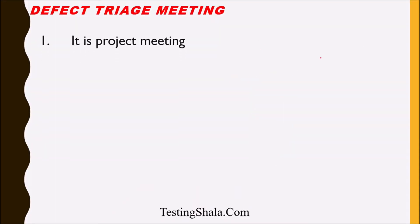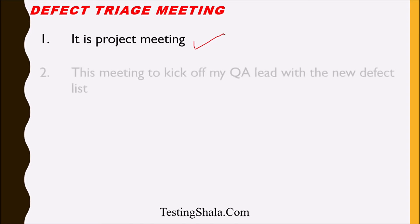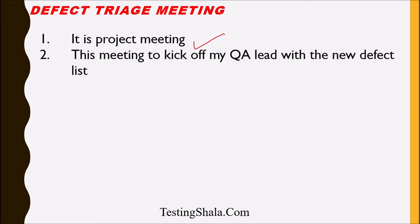A defect triage meeting is a project meeting — it is similar to any other project meeting in a given project. Its main intention is to go through the defect list. This meeting would be organized by the QA lead, who sends an invite to all the relevant stakeholders.